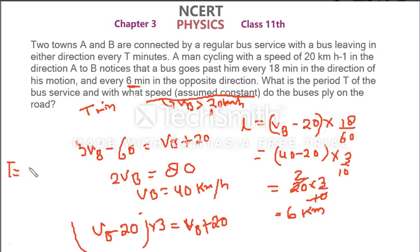Time period T is equal to distance 6 km upon velocity 40 km per hour. That is 9 minutes.